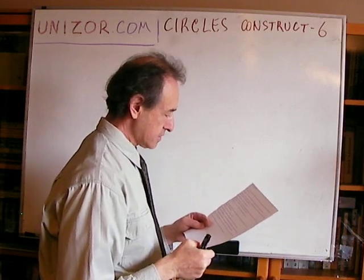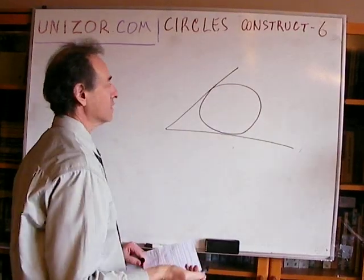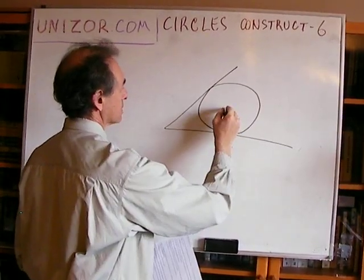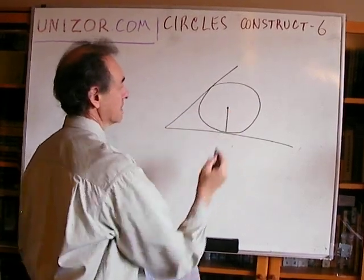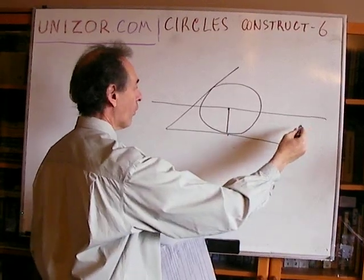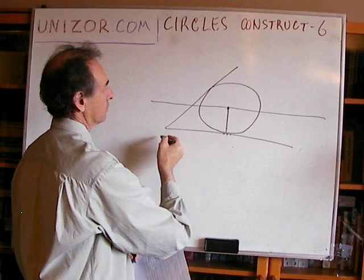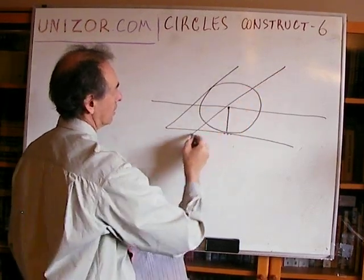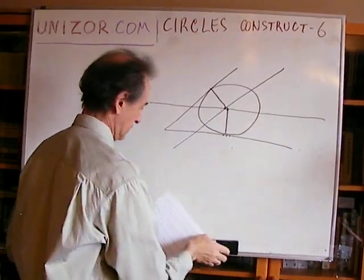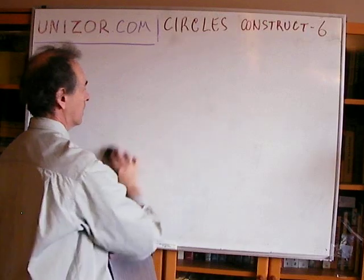Inscribe a circle of a given radius into a given angle — that probably is easy as well. You have to inscribe into an angle if you're given a radius. Obviously, the bigger the radius, the further it is from the vertex. If you are given the radius, your center is at this radius distance from this leg, which means if you draw a parallel line at this distance, it will be a locus of centers of circles of this radius tangent to this line. Draw a line at the same distance from the other leg, and the crossing of these two lines is your center. After all these problems we have solved, these are just peanuts.